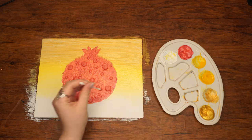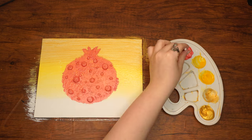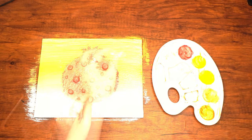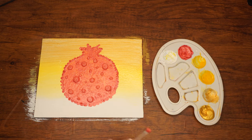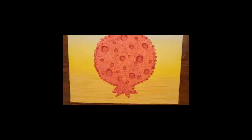Lastly, dip the q-tip into the red paint and outline the entire pomegranate with small dots. And that's a wrap! Enjoy your painting and make sure to find a good spot to hang it! We'll see you next week!